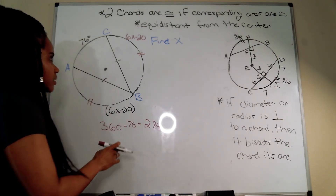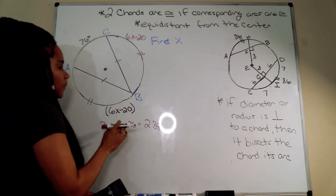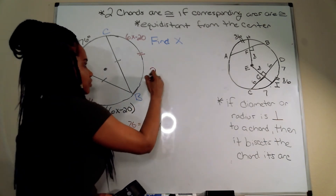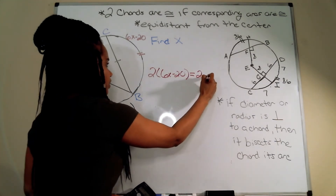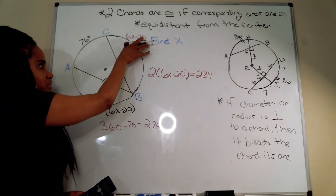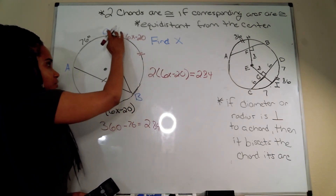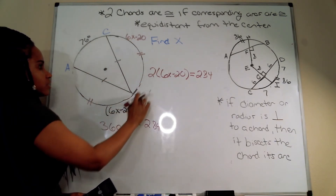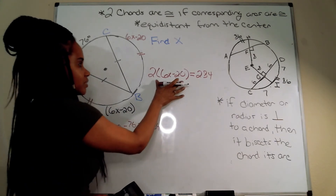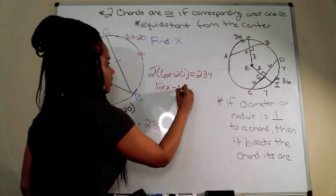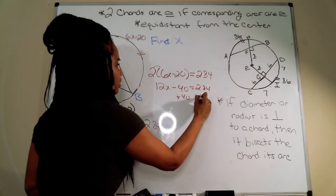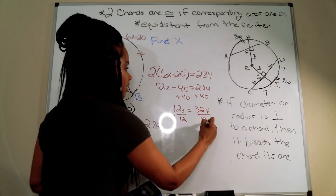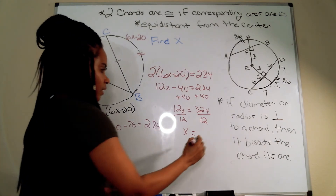Those two congruent arcs together equal 284, so I set up the equation: 2 times (6x minus 20) equals 284. Expanding: 12x minus 40 equals 284. Adding 40: 12x equals 324. Dividing by 12: x equals 27.